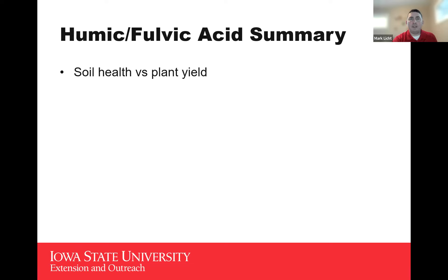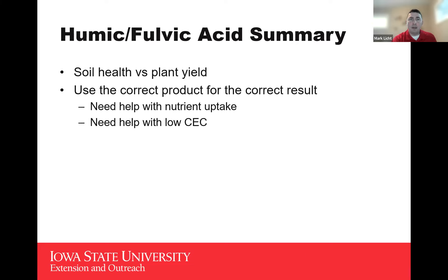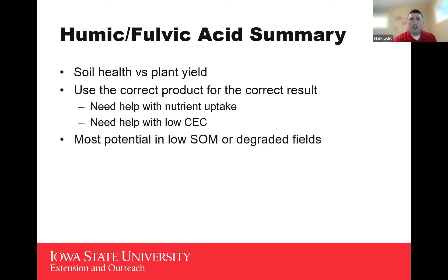Summarizing the humic and fulvic acids section: we have to balance soil health versus plant yield dynamics and decide what our goals are. If we're looking for soil health properties that may help stimulate plant growth and yield potential, there is some hope that humic and fulvic acids can be a benefit. If we're looking for nutrient uptake or have lower cation exchange capacities, this is a product that may be able to help. Another area with potential is in low soil organic matter situations or degraded fields.